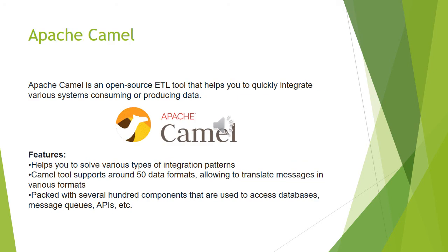The seventeenth commercial ETL tool is Apache Camel. Apache Camel is an open source ETL tool that helps you to quickly integrate various systems consuming or producing data. Some features are: it helps you to solve various types of integration patterns, Camel supports around 50 data formats allowing you to translate messages in various formats, and it packs in several hundred components that are used to access databases, message queues and APIs.